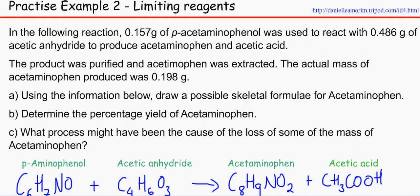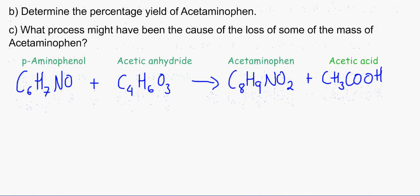I'm going to very quickly read out the question. In the following reaction, 0.17 grams of P-aminophenol was used to react with 0.486 grams of acetic anhydride to produce acetaminophen and acetic acid. The product was purified and acetaminophen was extracted. The actual mass of acetaminophen produced was 0.198 grams.